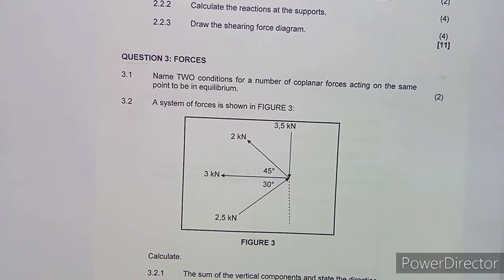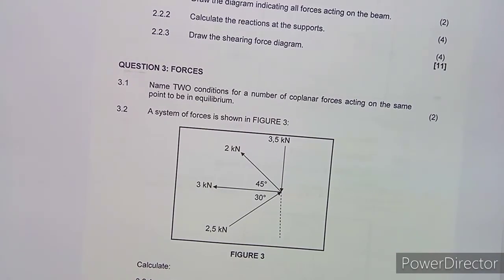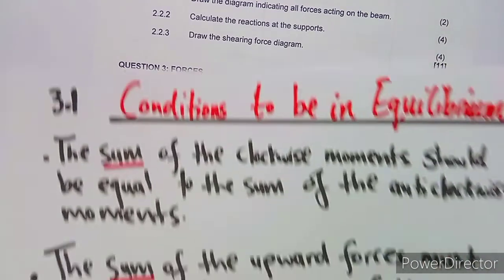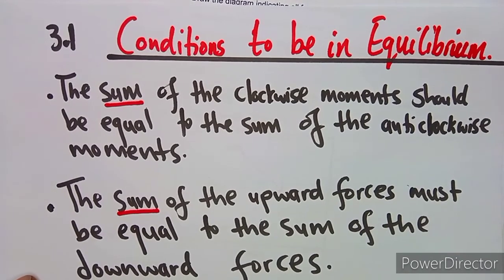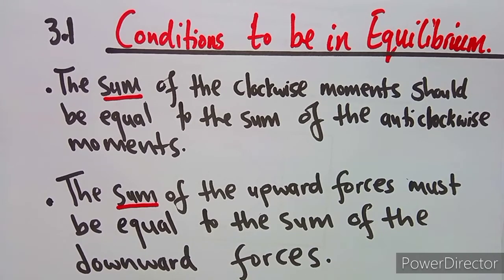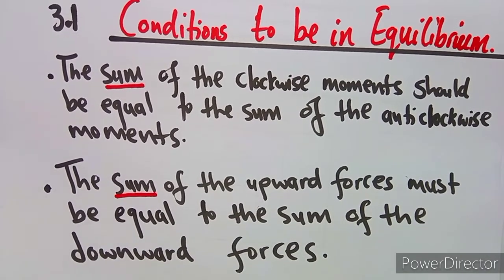On question 3.1, we are given: name two conditions for a number of coplanar forces acting on the same point to be in equilibrium. The conditions are: the sum of the clockwise moments should be equal to the sum of the anti-clockwise moments, and the sum of the upward forces must be equal to the sum of the downward forces.